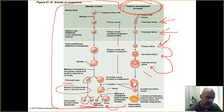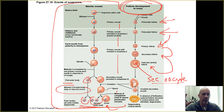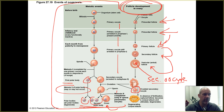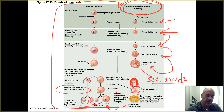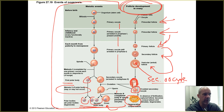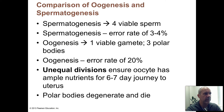Generally only one follicle per cycle becomes a vesicular follicle — the fully mature follicle. Inside it, the large cell is the secondary oocyte, which forms just before ovulation and is what gets released from the ovary during ovulation. The cells left over from that mature follicle undergo changes to become the corpus luteum, which is a hormone-producing structure we'll discuss shortly.